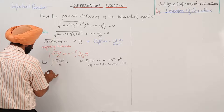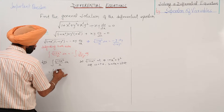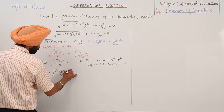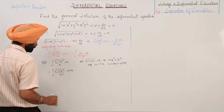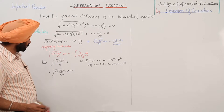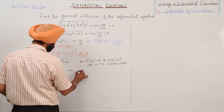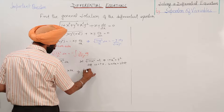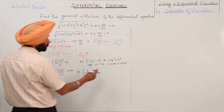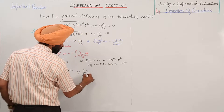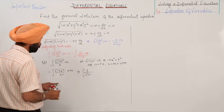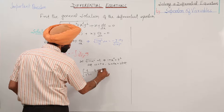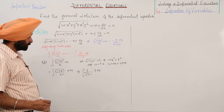We can write square root of 1 plus x square upon x square times x dx. I have multiplied and divided by x. Substituting the values, this becomes integration of t upon x square. Now x square from here is t square minus 1, and x dx equals t dt.